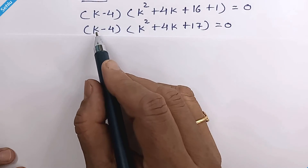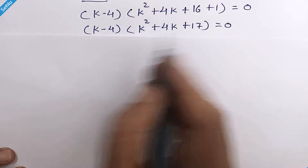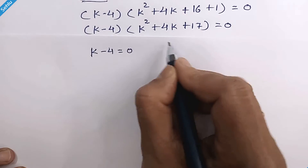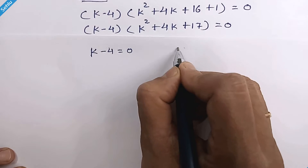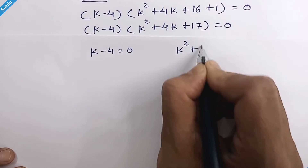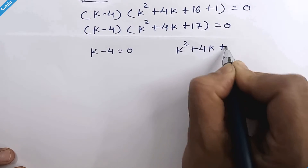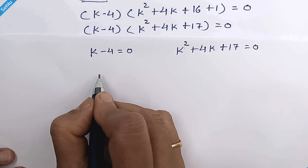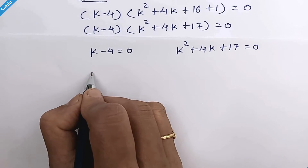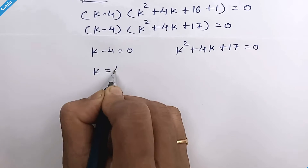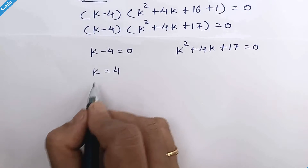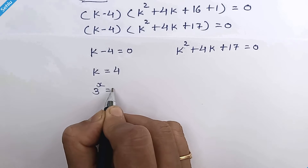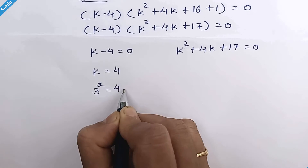Factoring out, the equation becomes k minus 4 times k squared plus 4k plus 17 is equal to 0. From here we can equate k minus 4 equal to 0, giving k is equal to 4. Since k was taken for 3 raised to x, we have 3 raised to x is equal to 4.